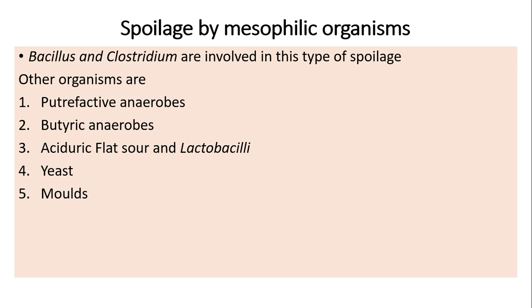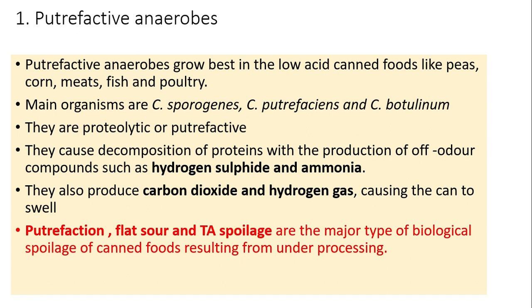Spoilage by mesophilic organisms involves Bacillus and Clostridium. The main types include putrefactive anaerobes, butyric anaerobes, aciduric flat sour, lactobacilli, yeast, and molds. Putrefactive anaerobes grow best in low acid canned foods like peas, corn, meats, fish, and poultry. Main organisms include Clostridium sporogenes, Clostridium putrefaciens, and Clostridium botulinum. They are proteolytic and putrefactive.